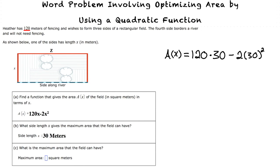120 multiplied by 30 is equal to 3600, and 2 multiplied by 30 squared is equal to 1800. After subtracting 1800 from 3600, we get our result 1800, which is our maximum area.